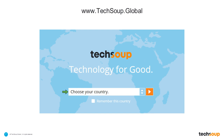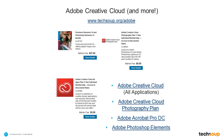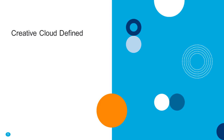We have somebody joining from Taormina in Sicily, Italy. If you are outside the United States, some of the program details around donated and discounted products may be different where you are. If you visit TechSoup.org/Adobe, this is where you can access information about the donated and discounted Adobe products available through TechSoup's US-based program. So with that, I'm going to hand it over to Wes to take us through Adobe Creative Cloud and help figure out what makes the most sense for your organization's needs.